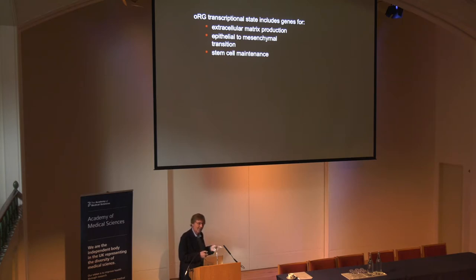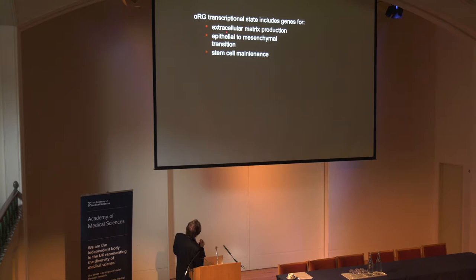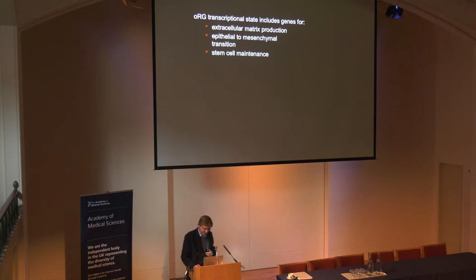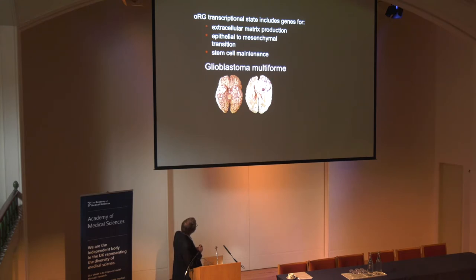The genes that are markers for these cells are not just markers — they're expressed uniquely in the cell type because of signaling pathways. The coherence of those genes was really striking. They fit into just a handful of processes: genes associated with extracellular matrix production, the epithelial-to-mesenchymal transition (which we think is how these cells arise), and stem cell maintenance, because they form their own niche at a distance from the ventricle. Going to the literature, time and again we found all these genes enriched in outer radial glial cells had previously been highlighted in glioblastoma multiforme — a terrible, aggressive, and largely untreatable disease of the adult brain.